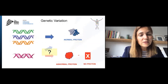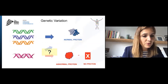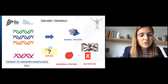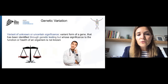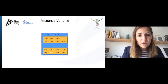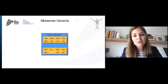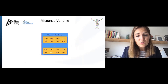For some variants, however, it is not known whether they will lead to a normal protein, an abnormal protein, or absence of protein. So we don't know what it means, and we call this a variant of unknown or uncertain significance, or a VUS. Variants of unknown or uncertain significance are variant forms of a gene identified through genetic testing, but whose significance to the function or the health of an organism is not known. An example of this is missense variants — those are variants that substitute one amino acid, one building block within a protein, by another amino acid.